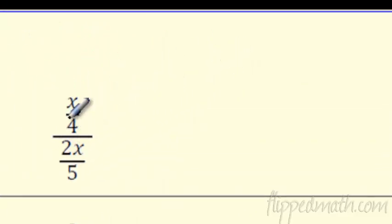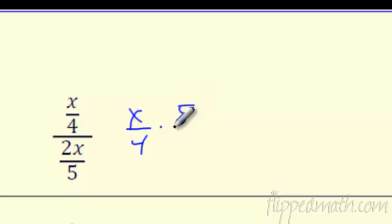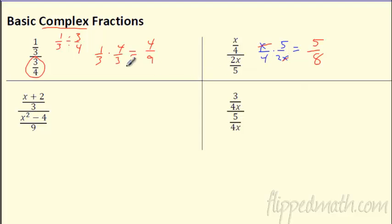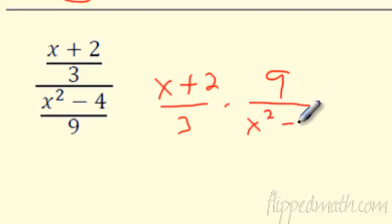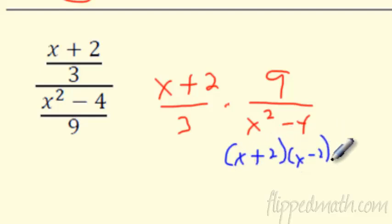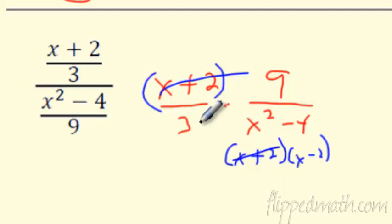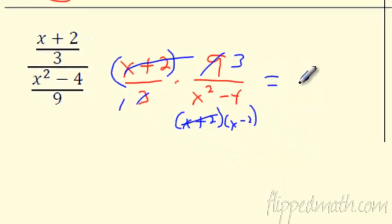So again, this fraction bar means division. What do I do? I have x over 4, flip the bottom fraction — so it's 5 over 2x — and multiply. Does anything cancel? Oh yeah, the x's cancel. I think that's it for numbers — we're looking at 5 eighths. Not too bad. Check this one out — I'm going to take that top fraction and rewrite it, then multiply by flipping this bad boy over, so I'm looking at 9 over x squared minus 4. Let's factor — another difference of squares! x plus 2 on top cancels x plus 2. The 3 goes into itself once, goes into that 3 times. On top: 1 times 3 is 3. On bottom: x minus 2. Fantastic!